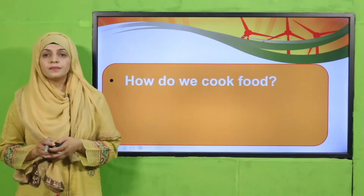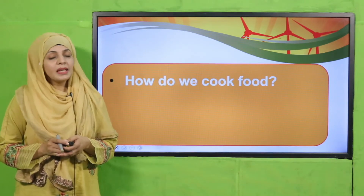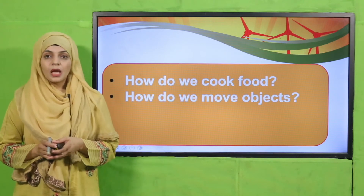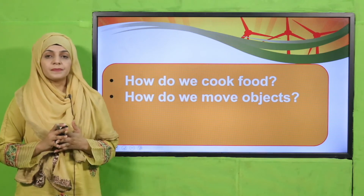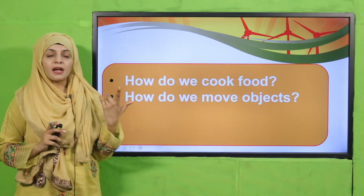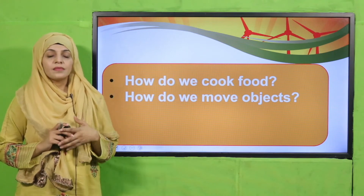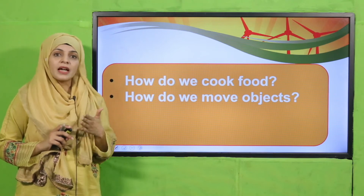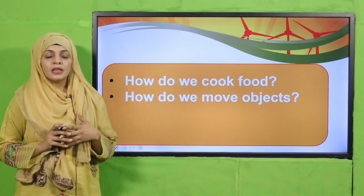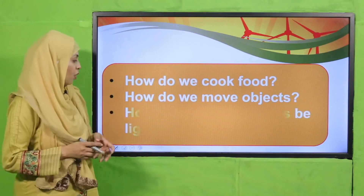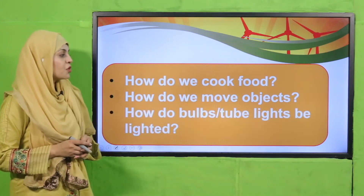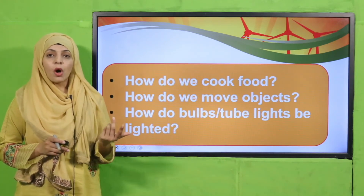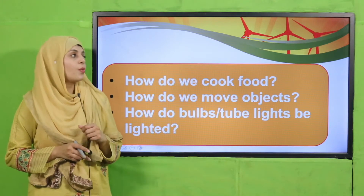Now let's quickly look at the pre-reading question. How do we cook food? We cook food using heat. How do we move objects? For example, pankha kaise chalta hai? It moves with the help of electricity. Gaariyan kaise chalti hain? They use fuel. How do bulbs and tube lights get lighted? With the help of electrical energy.